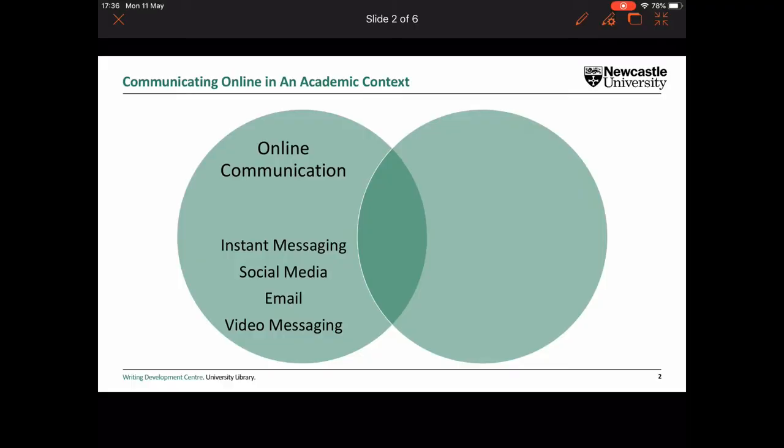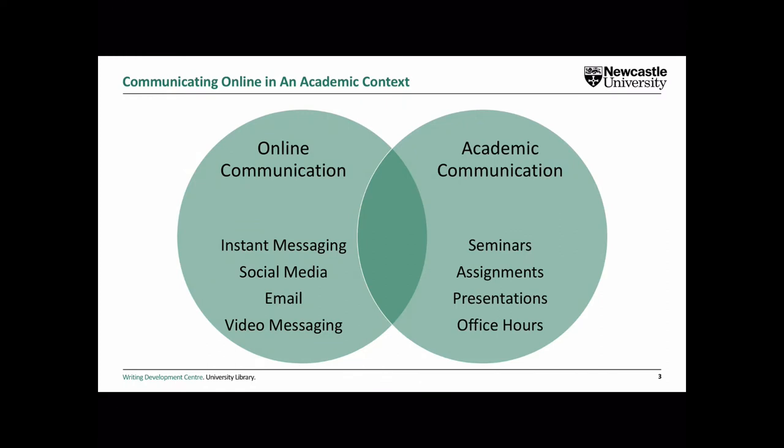With the move to online learning, you may have found that a lot of the academic discussions you're having are now taking place in unfamiliar new environments like webinars or messaging boards. A lot of conversations I've been having with students recently is about the best or most appropriate way of communicating in these new environments. You may have a lot of experience communicating online through instant messaging, social media, or email, and depending on where you are in your academic studies, you'll probably have some experience communicating within an academic context, such as face-to-face seminars or research papers.